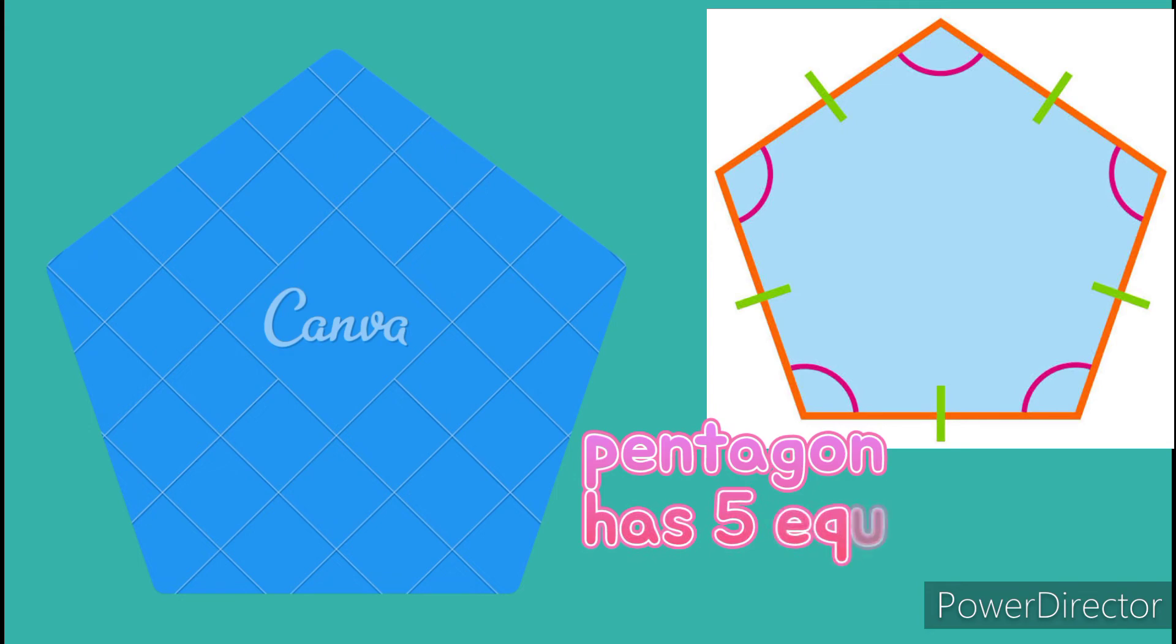Pentagon has five equal sides and angles. Pentagon is a flat two-dimensional shape. Count: one, two, three, four, and five.